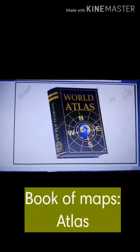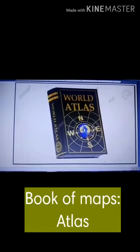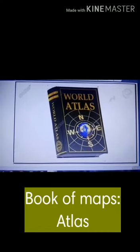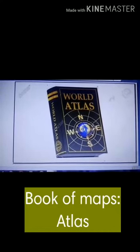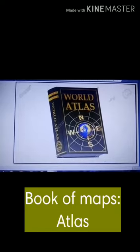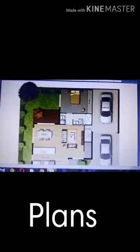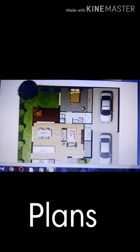These different types of maps can be put together in a book called an Atlas. An Atlas is a book of maps. Maps that show small areas such as a street, house or room in detail are called plans.